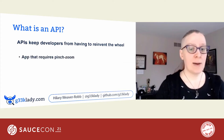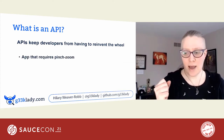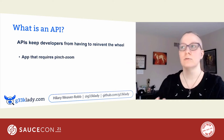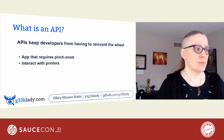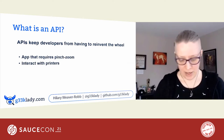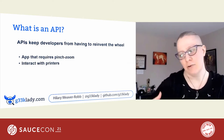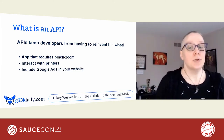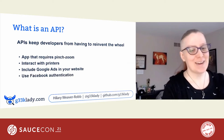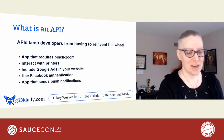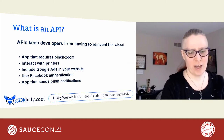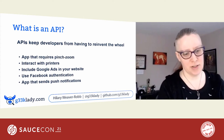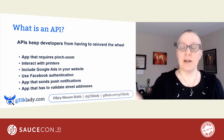For instance, an app that requires pinch zoom on your phone — every developer didn't have to write that themselves every time. There's an API from your phone operating system that provides that. Interacting with printers — not every application had to write how to interact with an HP printer; HP has an API for that. Google Ads has an API for that. Facebook authentication, same thing. And apps that send push notifications — when you write an app, you don't have to figure out how to do that every time. There's an API that does that for you. And the same with validating street addresses.